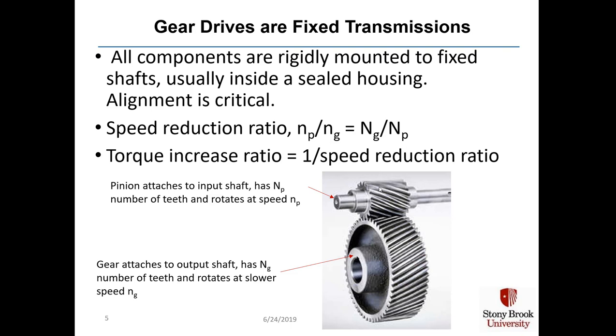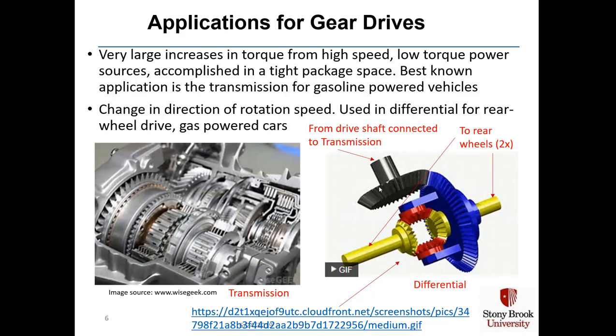The torque increase ratio is one over the speed reduction ratio. So if your speed is reduced by a factor of four, your torque will be increased by a factor of four. Gear drives give you very large increases in torque from a high-speed, low-torque power source — usually some type of motor, or in the case of a gasoline engine, the actual motion of the gas-fired pistons.